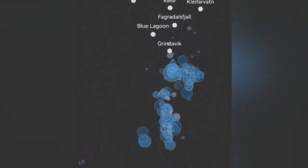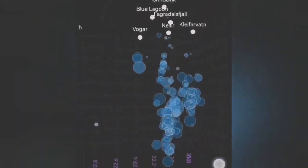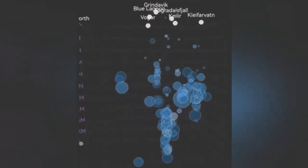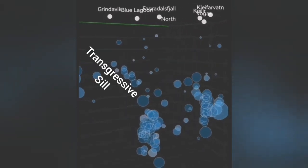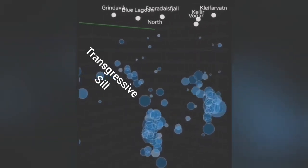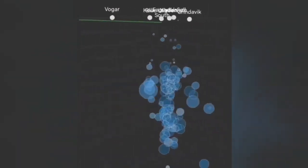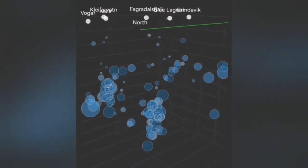For example, when I look at the earthquake depth chart, you can see a tongue of earthquakes at an angle moving from practically under Svartsengi toward Grindavik. We call it a transgressive sill in geological terms—a sill which has an angle and rises gradually, but not vertically.